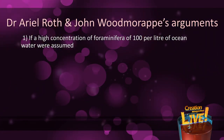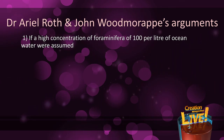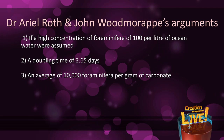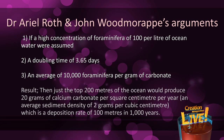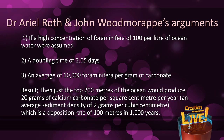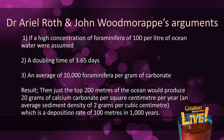Roth argues that: one, if a high concentration of foraminifera of 100 per litre of ocean water were assumed; two, a doubling time of 3.65 days; and three, an average of 10,000 foraminifera per gram of carbonate — then just the top 200 metres of ocean would produce 20 grams of calcium carbonate per square centimetre per year, or at an average sediment density of 2 grams per cubic centimetre, a deposition rate of 100 metres in a thousand years.